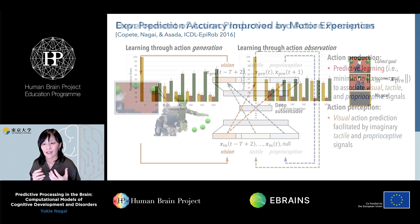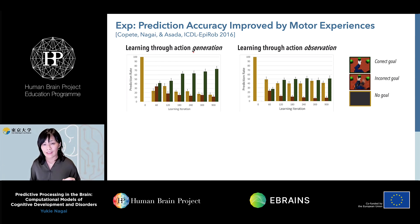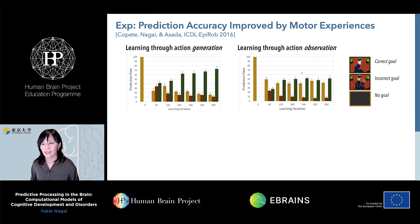We tested these ideas in two comparative experiments. We trained the same network under different conditions. In one condition, the robot received action generation experiences — the network was trained using three modality signals: visual, tactile, and proprioceptive. In the second condition, the robot received only observational experiences, meaning the network was trained using only the visual signal. Focusing on the green bars indicating accuracy of correct goal predictions, you can see that in the action generation condition, accuracy significantly increases as learning proceeds, and is much higher than in the action observation condition.